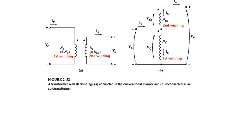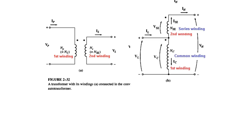Now for terminology: VP is the primary voltage and NP (also called NC) refers to the primary or common winding. The secondary winding corresponds to NSE, the series winding. When the secondary is added on top, this becomes the series winding (SE), while the first winding is called the common winding (C). These labels — series winding and common winding — will be used throughout.